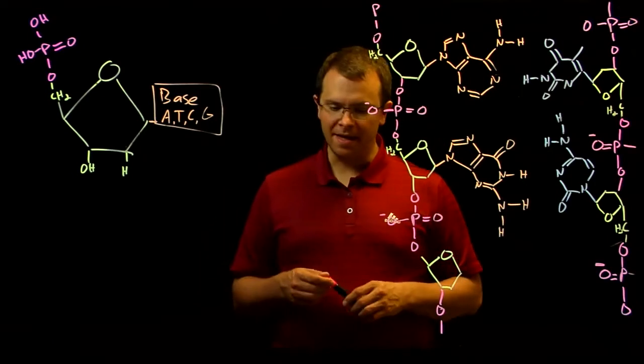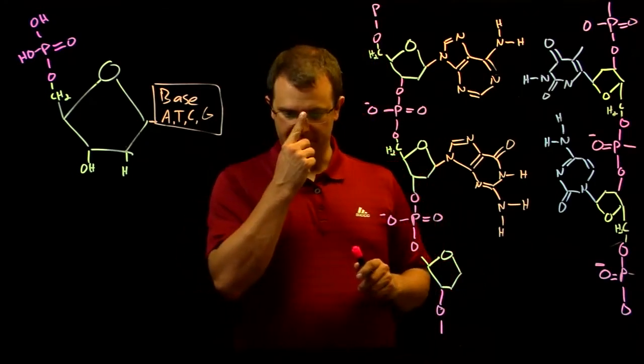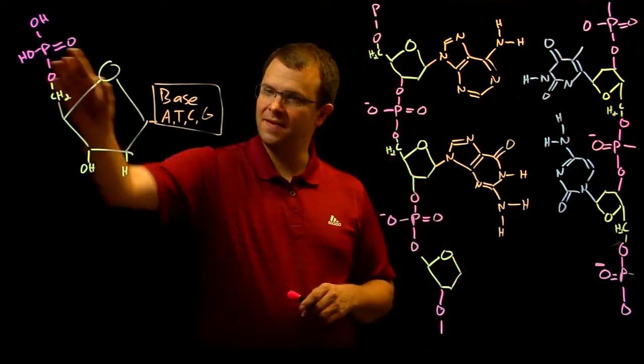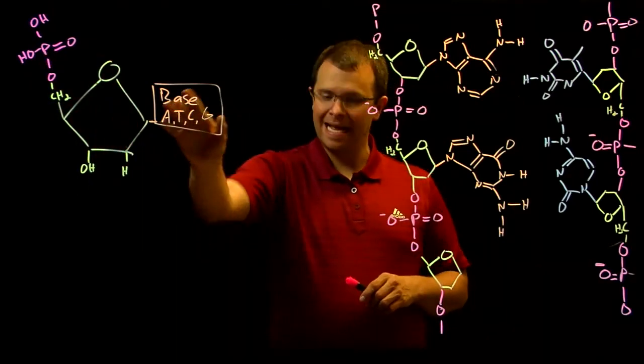A nucleotide has three subunits. It's got a sugar, which I've drawn here in green. It's got a phosphate, which I've drawn in pink, and it has a base.